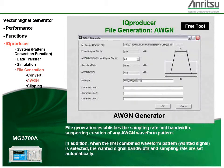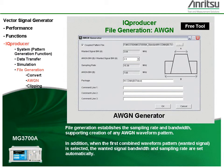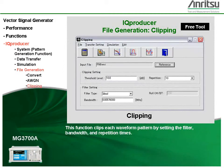File generation establishes the sampling rate and bandwidth, supporting creation of any AWGN waveform pattern. In addition, when the first combined waveform pattern is selected, the desired signal bandwidth and sampling rate are set automatically. This function clips each waveform pattern by setting the filter, bandwidth, and repetition times.